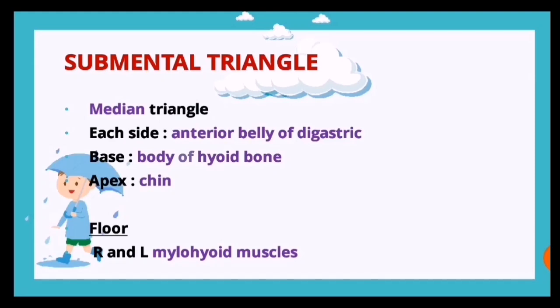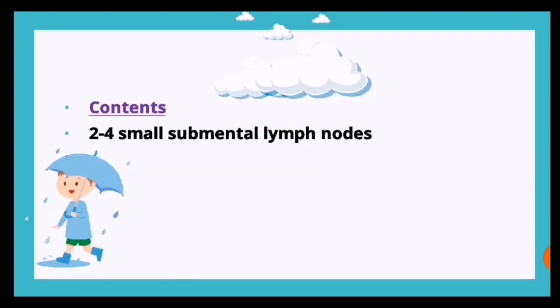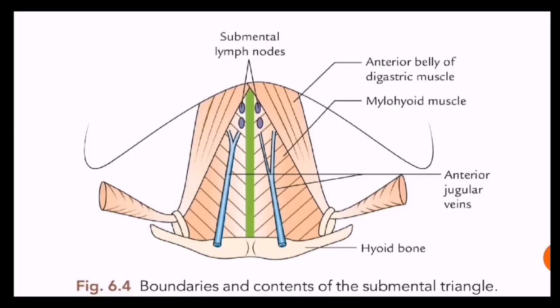The first triangle is the submental triangle - it's a median triangle. It is bound on each side by the anterior belly of digastric, the base is formed by the body of the hyoid bone, the apex is formed by the chin, and its floor is formed by the right and left mylohyoid muscles. The contents are two to four small submental lymph nodes.